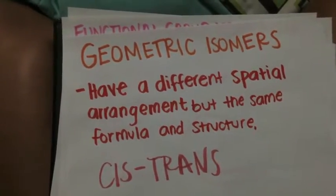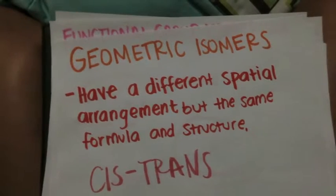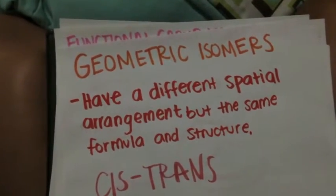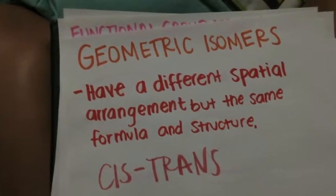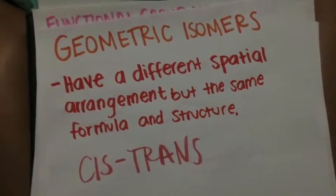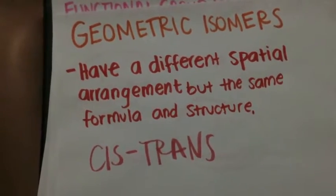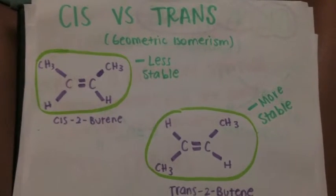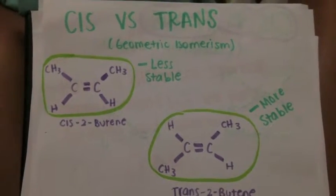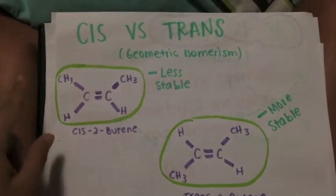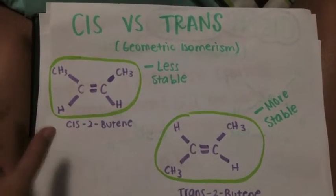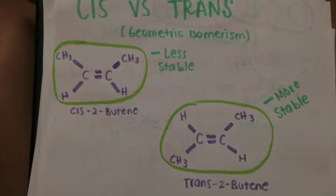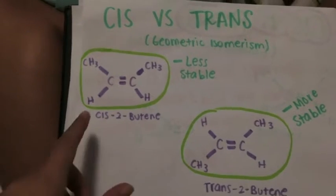Now we will take a look at geometric isomers. Geometric isomers differ from structural isomers because they have a different spatial arrangement, but the same formula and structure. The type of geometric isomers we will be talking about is cis-trans isomerism. In cis-trans isomerism, when there is a double bond between two carbons and the functional groups are on the same side of the bond, it is a cis-alkene.